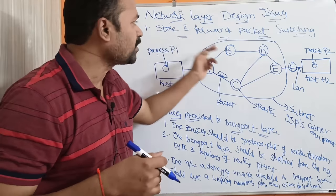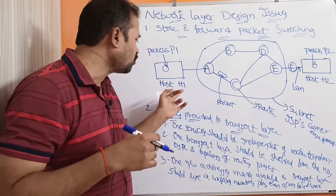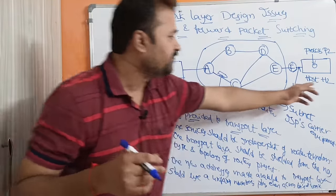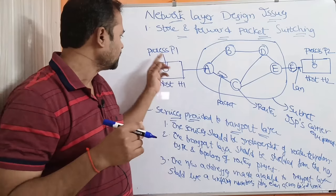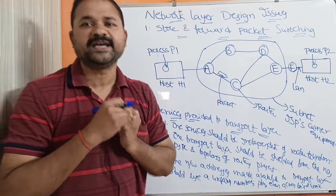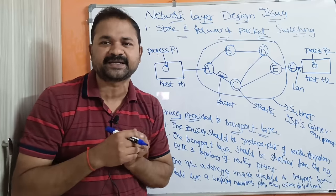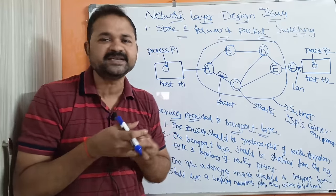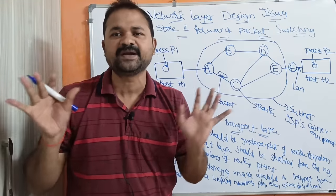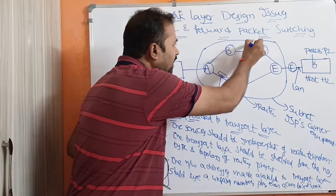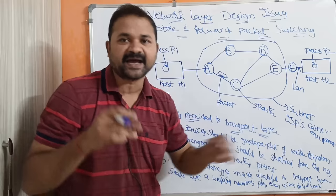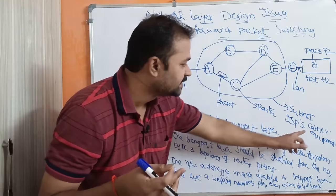Let us see about store and forward packet switching. Here we have host H1 and host H2. H1 is the source host, whereas H2 is the destination host. Process P1 is running on host H1 and process P2 is running on H2. Let us assume that the process is nothing but a Gmail, so our main aim is H1 wants to send an email to H2. Here we have a subnet — a network, or we can also call this as ISP, which means Internet Service Providers carrier equipment.